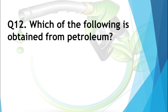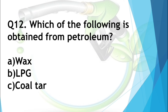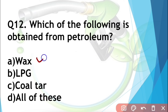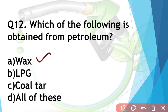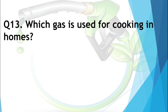Question number twelve: Which of the following is obtained from petroleum? Options are wax, LPG, coal tar, or all of these. If you have studied this chapter, you know that we get wax, LPG, and coal tar from petroleum. So the answer is all of these.